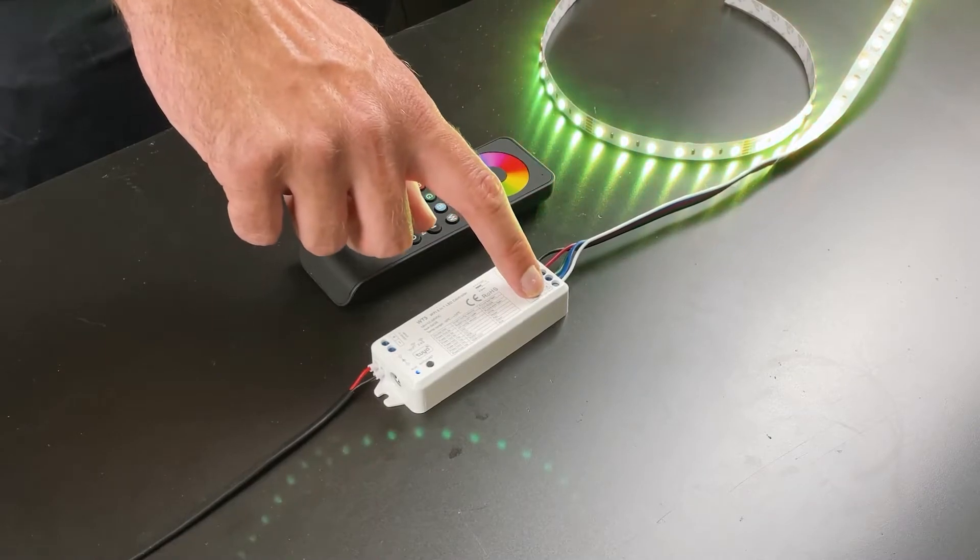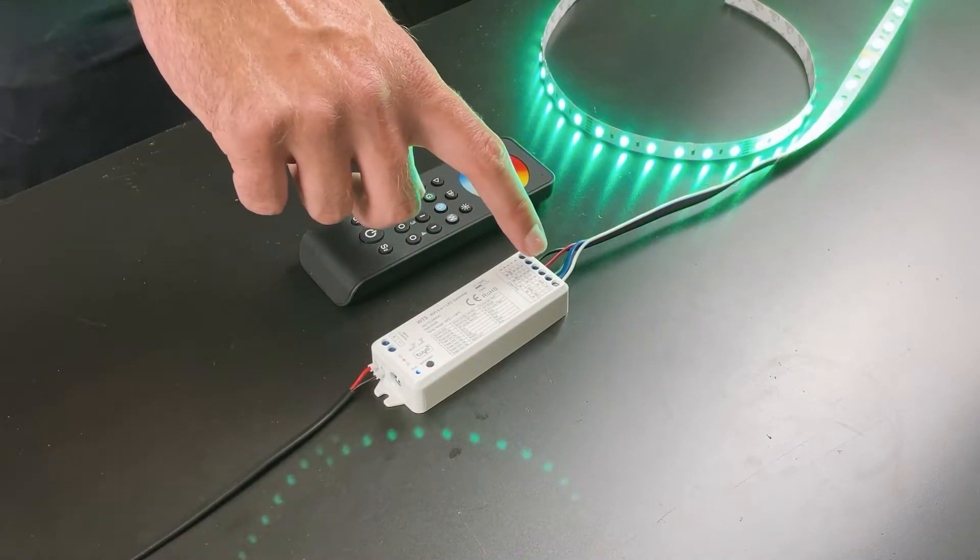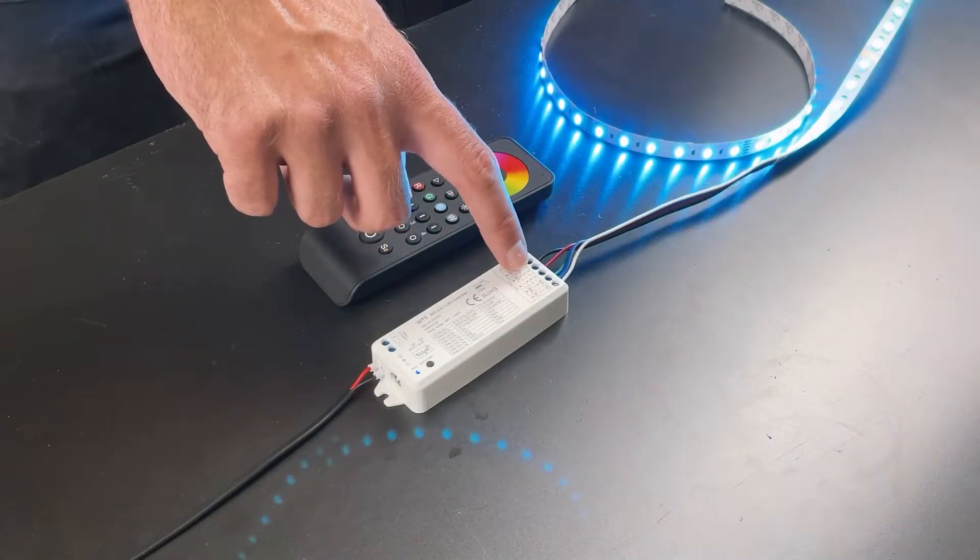The WT5 is fitted with a gated terminal block so the wires will not necessarily need to be ferruled.